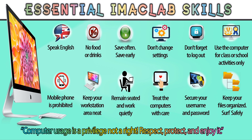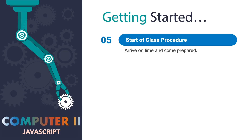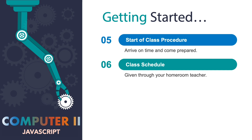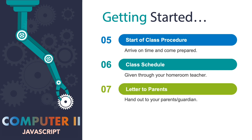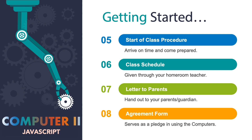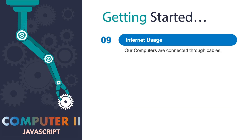Continuing with our guidelines, we are now on guideline number five: the start of class procedure. You are expected to arrive on time and come prepared. Number six is our class schedule, which will be given through your homeroom teacher. Seven is the letter to parents — I will distribute letters for you to hand to your guardian or parents when you get home. Number eight is the agreement form, which serves as a pledge in using the computers. Number nine is internet usage — our computers in the lab are connected through cables.